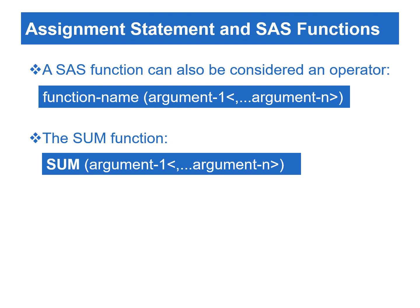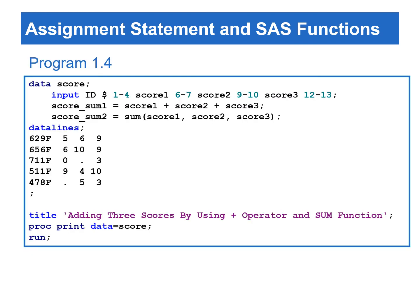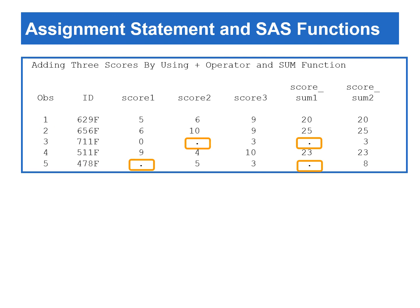For example, to calculate the sum of a list of numeric variables, we can use the sum function. Program 1.4 reads five observations by using the datalines statement, and creates two variables, scoreSum1 and scoreSum2. ScoreSum1 and ScoreSum2 are created by using the plus operator and the sum function, respectively. When adding two or more variables, the sum function treats the missing values as zero, hence the resulting value will not be missing. However, calculations using the arithmetic operator will result in a missing value if any operand contains a missing value for an observation. As you can see, there are missing values in the scoreSum1 variable, due to the use of the plus operator in the assignment statement.